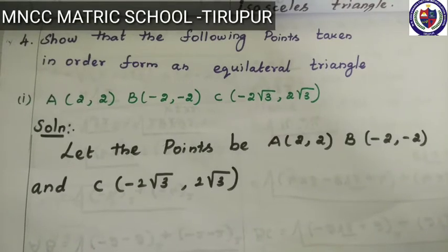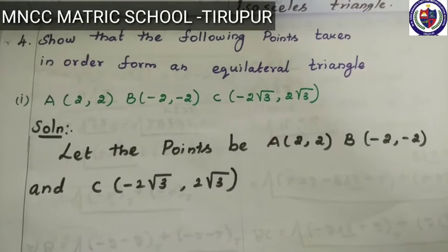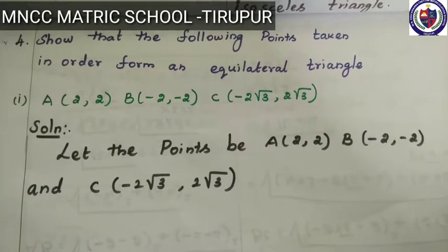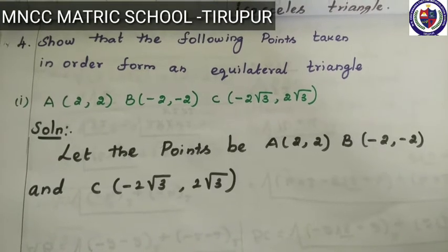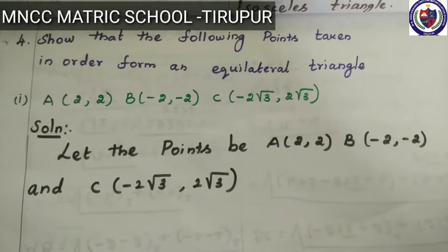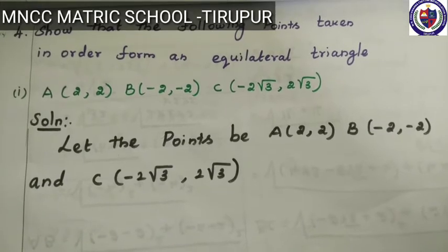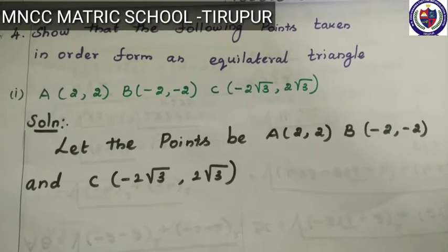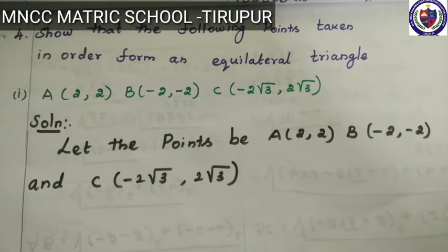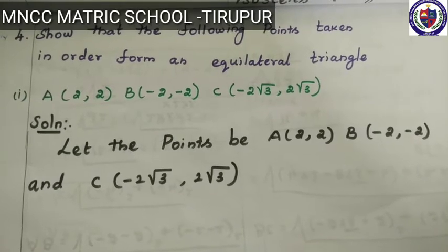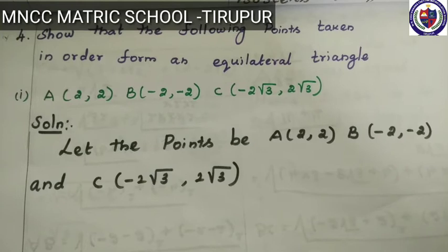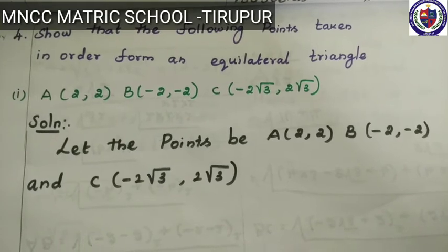Dear student, this is exercise 5.2, second part, fourth sum. Show that the following points taken in order form an equilateral triangle. Equilateral triangle meaning three sides are equal. They are given three points A, B, C.